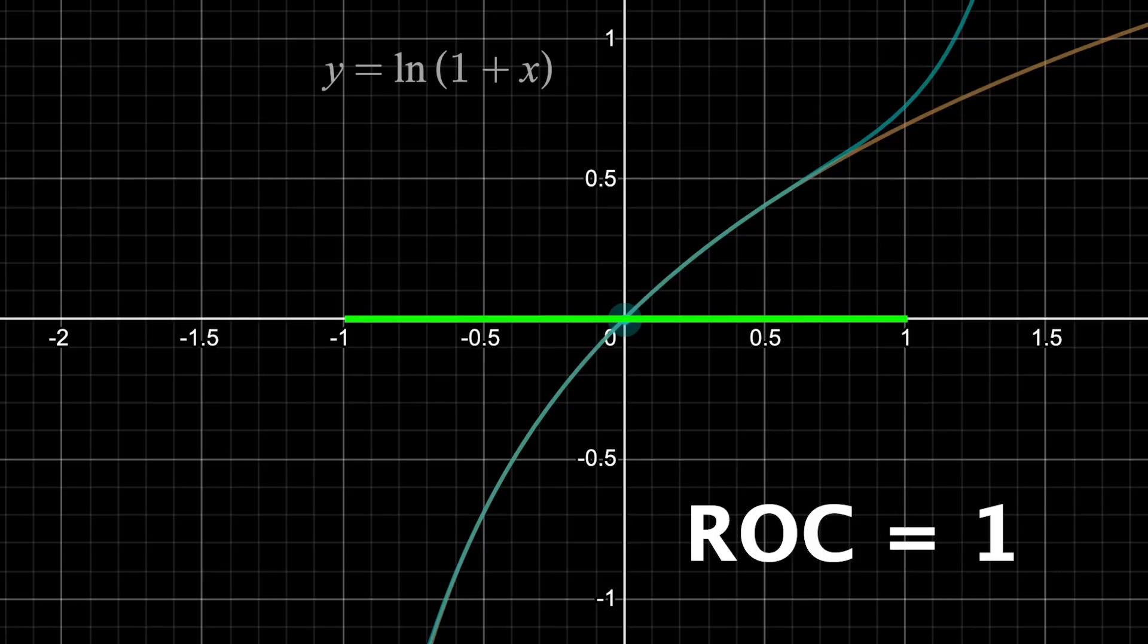But everything in the interval, including x equals 1, becomes a perfect approximation. Note, I'm only going a few terms out, because I'm kind of limited by desmos here. But you can see the approximation gets worse outside that interval.